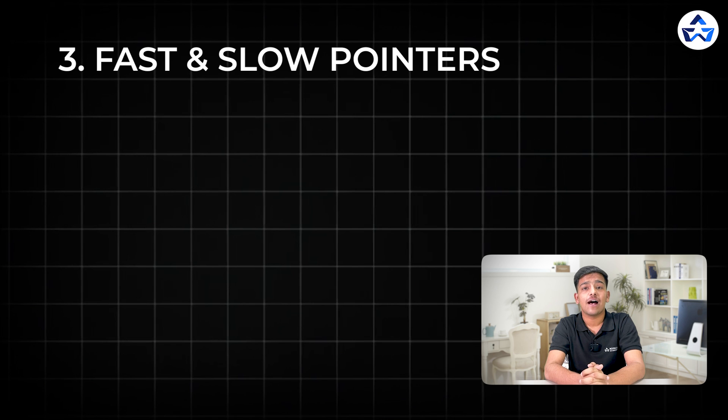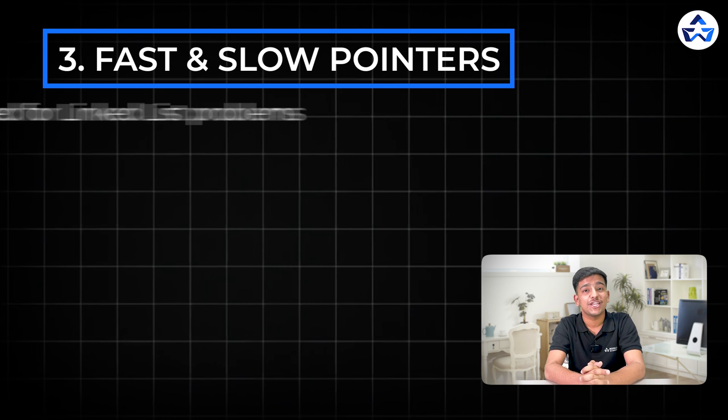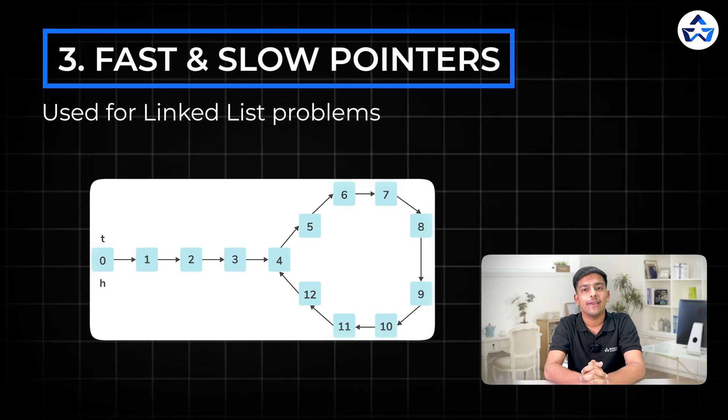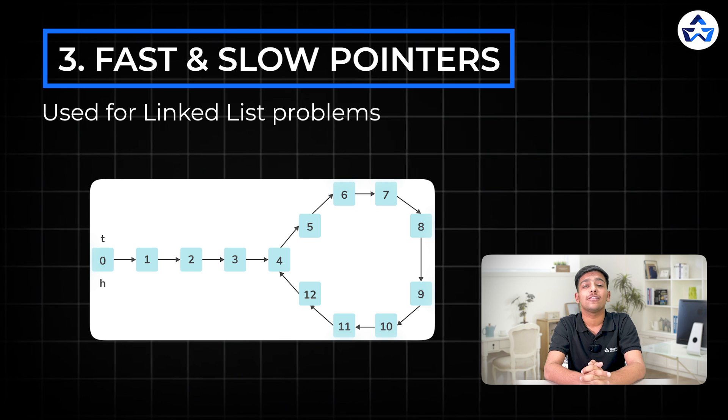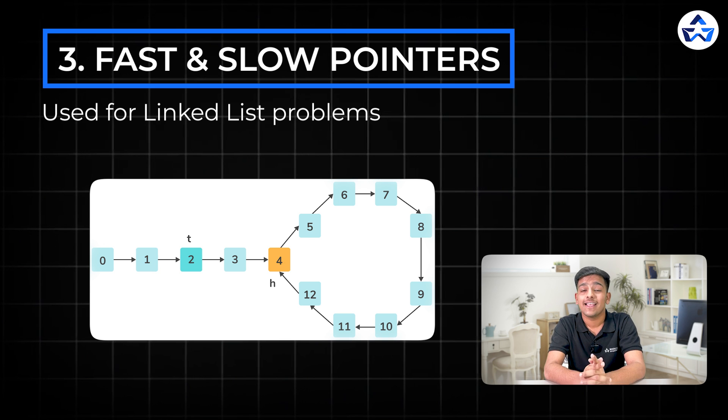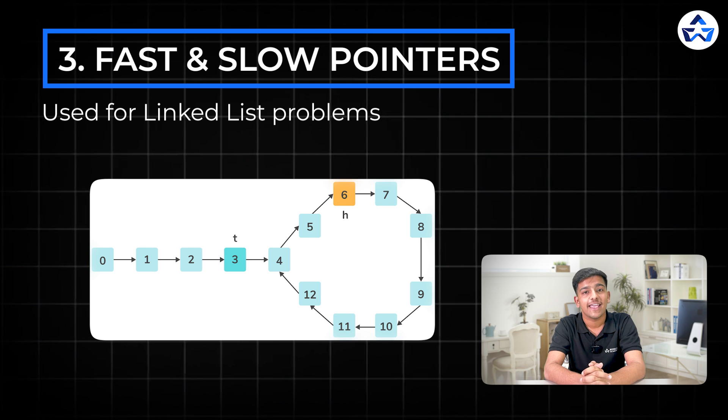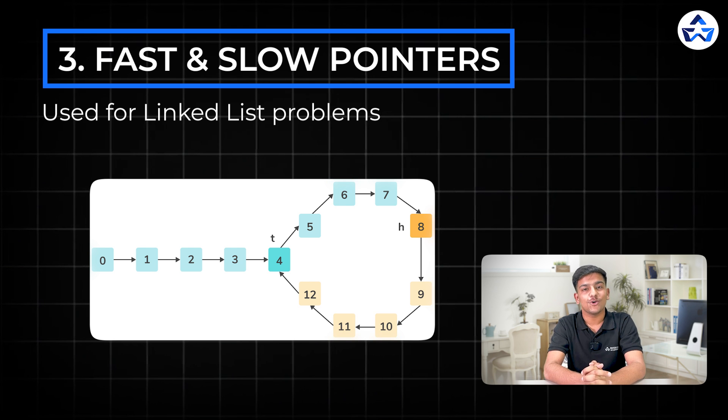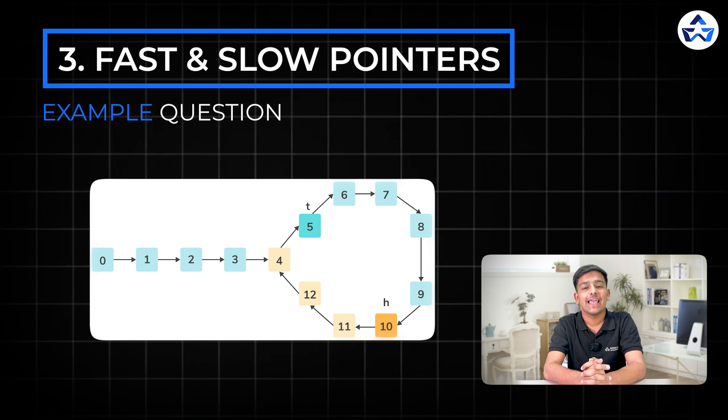Moving on to the third one, fast and slow pointers. This is specially used for linked list problems. This pattern is great for detecting cycles and the middle node of the linked list. The trick here is that one pointer moves faster than the other one which lets you find the cycle or middle element efficiently. So the example question for the same is linked list cycle.